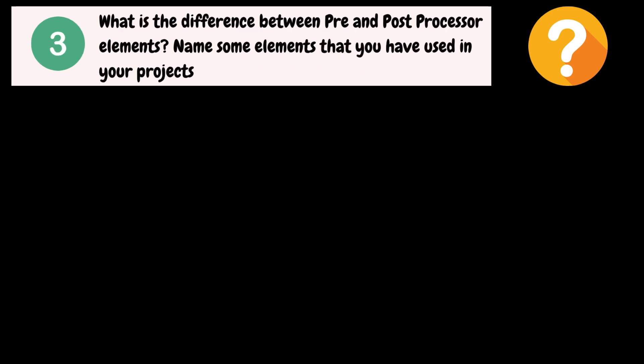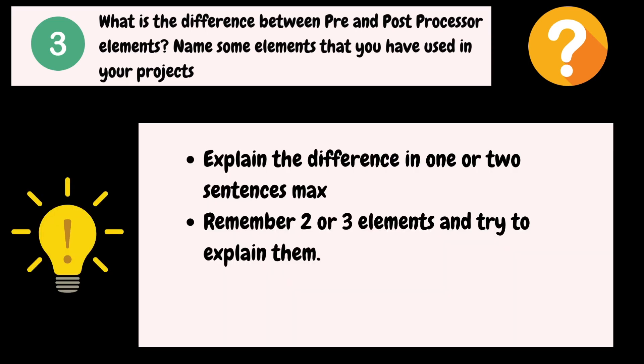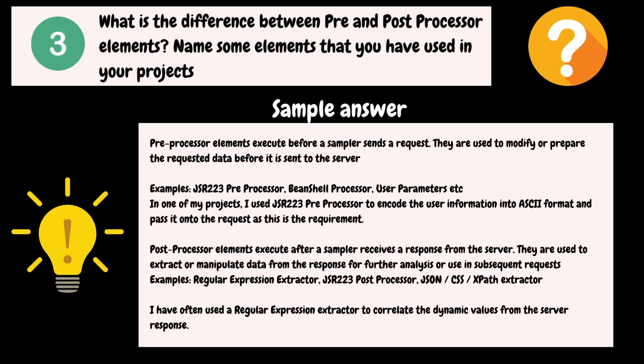What is the difference between pre and post processor elements? Name some of the elements you have used in your projects. Here they are trying to understand your knowledge of pre and post processor elements. Explain the difference in one or two sentences and try to name two or three elements from each category. The sample answer: pre-processor elements execute before a sampler sends a request. They are used to modify or prepare the request data before it is sent to the server. Some pre-processor elements are JSR223 Pre-Processor, BeanShell Pre-Processor, and User Parameters.